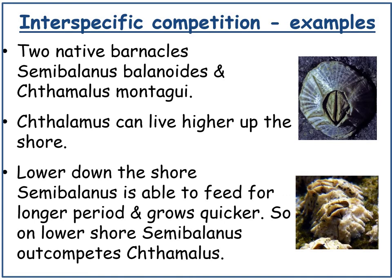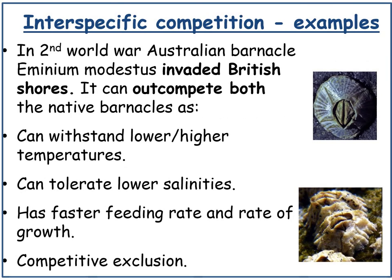Another example involves two native barnacles: Semibalanus and Chthamalus. Chthamalus can live higher up on the shore; lower down, Semibalanus feeds for longer periods and grows quicker, outcompeting Chthamalus on the lower shore. However, the Australian barnacle Elminius modestus invaded British shores and outcompetes both native barnacles because it can withstand temperature extremes, tolerate lower salinities, and has a faster feeding rate and growth rate — giving it a competitive advantage that will eventually lead to competitive exclusion.